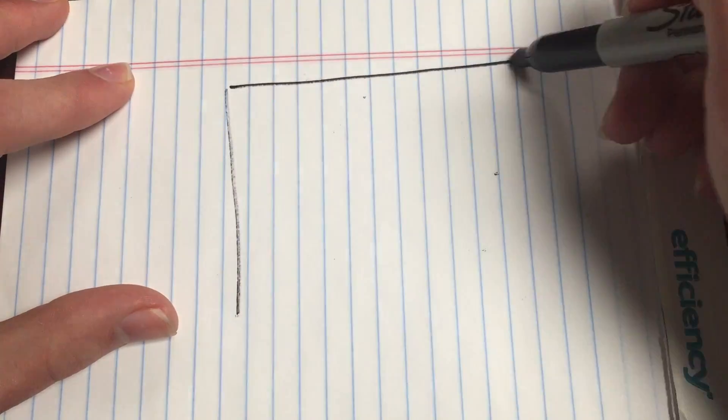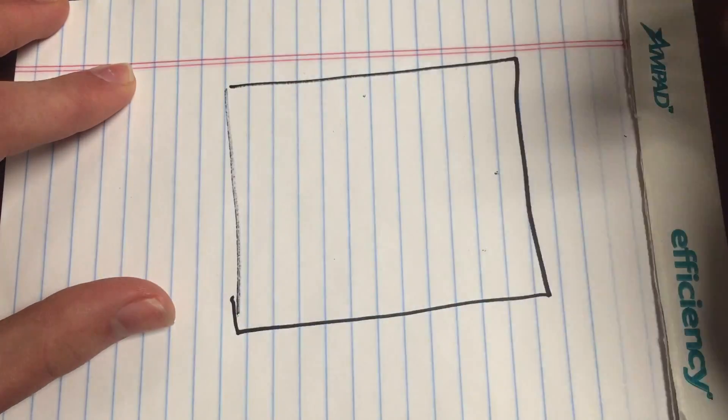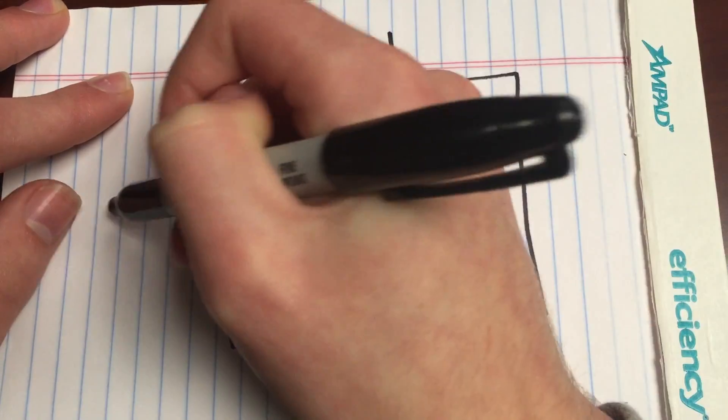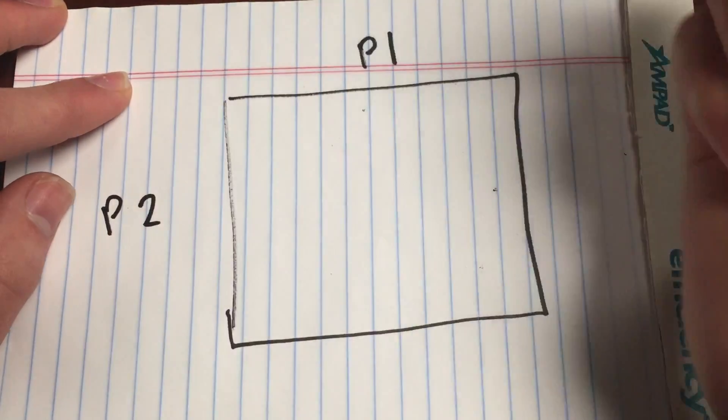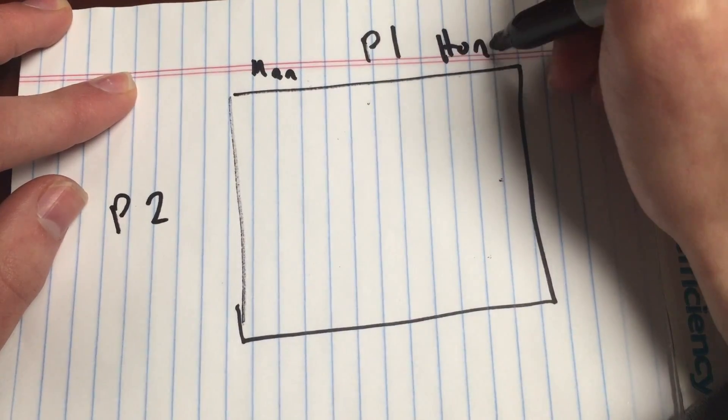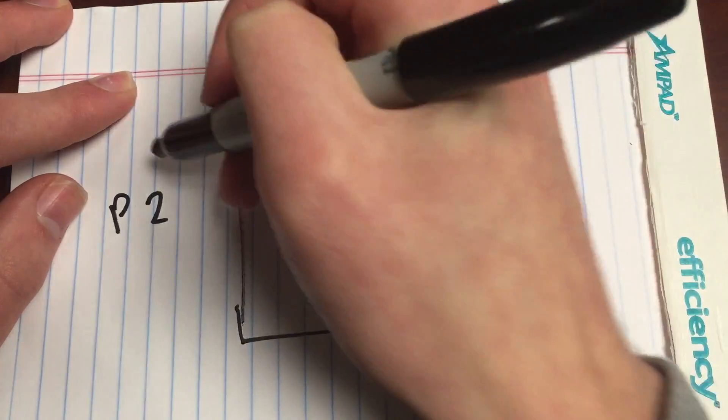So we're going to have, for simplicity's sake, two players in this game we're going to discuss. We're going to have player one over here and player two over here. And like I discussed, we're going to have two options, which is manipulative and honest.